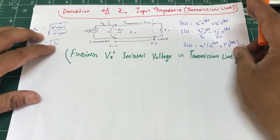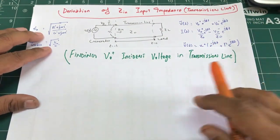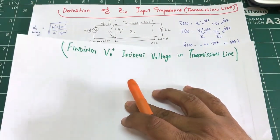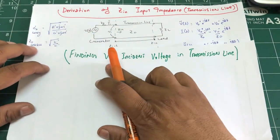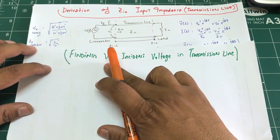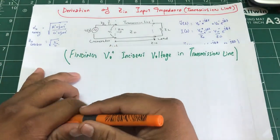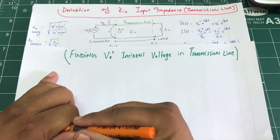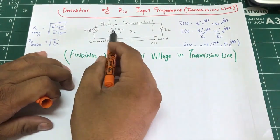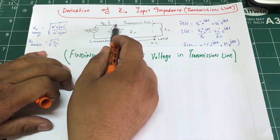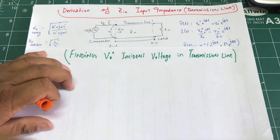Now the next step I want to do is find out what my incident voltage is, which we are calling V₀⁺. So the incident voltage — if we recall the circuit, what is that voltage right at this point before it enters into the transmission line?